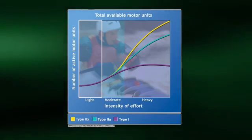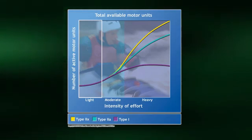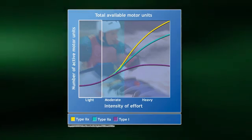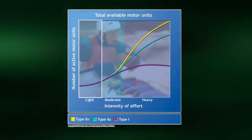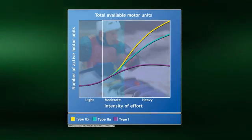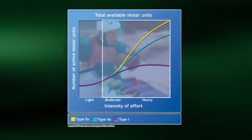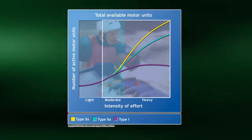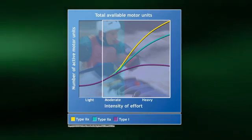This should make sense, since at the easy workloads, only a small amount of force is required, and the type 1 fibers are slow to fatigue. Thus, an individual would be able to exercise at this intensity for a long period of time. However, as the exercise intensity increases to moderate and heavy, type 2A and type 2X fibers are also recruited to help generate the force required for these more difficult workloads.